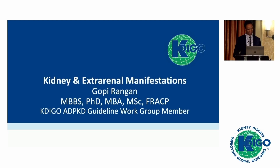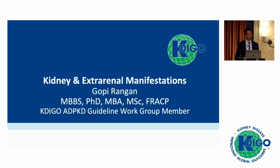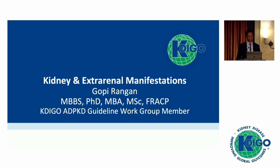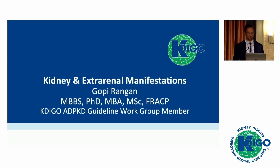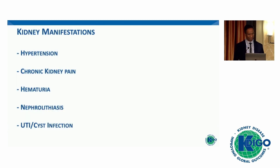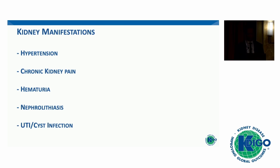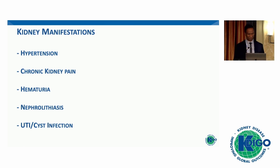Today I'm going to briefly outline the kidney and extra-renal manifestations of polycystic kidney disease. As you all know, ADPKD is a systemic disease. I'm going to cover just some selected areas in the guidelines, and we'd appreciate feedback when you get a chance to look through them. Topics I'll cover include hypertension, chronic kidney pain, hematuria, kidney stones, urinary tract infections, and polycystic liver disease.